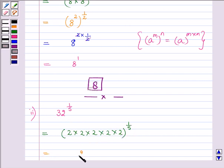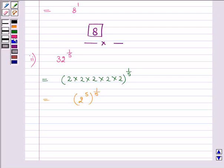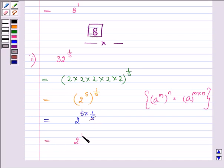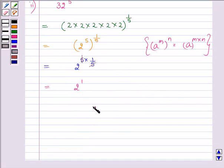Proceeding on we can write 2 to the power 5 as it is occurring 5 times and then using the same identity, which is a to the power m to the power n is equal to a to the power m multiplied by n. So we can open the brackets, 2 to the power 5 multiplied by 1/5. They both will get cancelled out and we are left with 2 to the power 1 whose answer will be 2 itself. So this completes the second part.